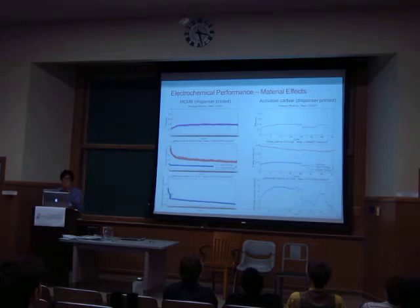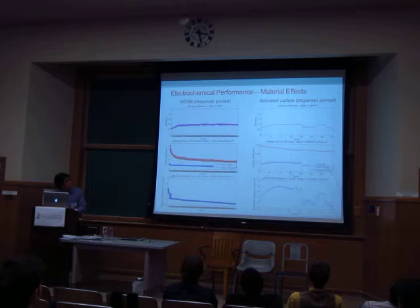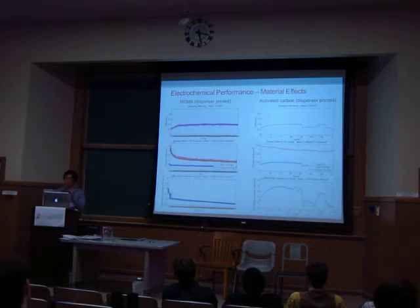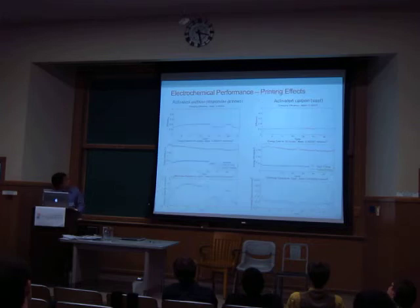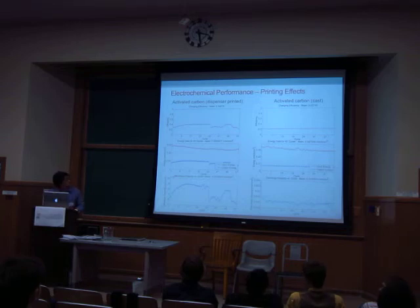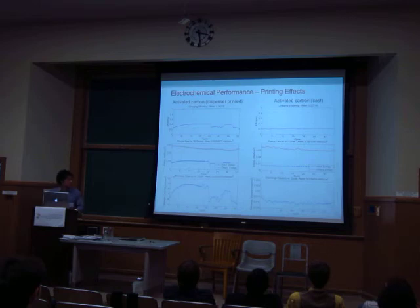Finally, I managed to print out successfully working devices and cycle them for different amounts of time. The left column shows the mesocarbon microbeads used as a standard, and the right side shows the activated carbon electrode, made to demonstrate improvements. Both are dispenser printed and the charging efficiencies are roughly the same at about 0.37. But the energy and discharge capacity of the activated carbon electrode is much higher — by two orders of magnitude — than the mesocarbon microbeads, proving that the smaller particle size does help. I then compared the dispenser printed and cast activated carbon capacitors. The energy of the cast capacitor is slightly lower, likely due to more interfacial issues from the processing parameters. But discharge capacity is higher by another order of magnitude, proving that this casting method may indeed create better devices with higher throughput.